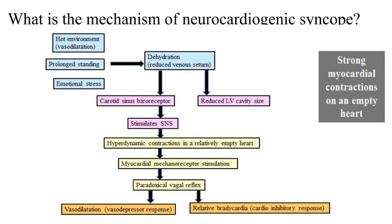What is the mechanism of neurocardiogenic syncope? The main pathogenesis lies in strong myocardial contraction on an empty heart — this is the crux which leads to syncope in such situations. The various triggers — hot environment, prolonged standing, emotional stress, and dehydration — all lead to vasodilatation, reduced venous return, and essentially activate the baroreceptor.